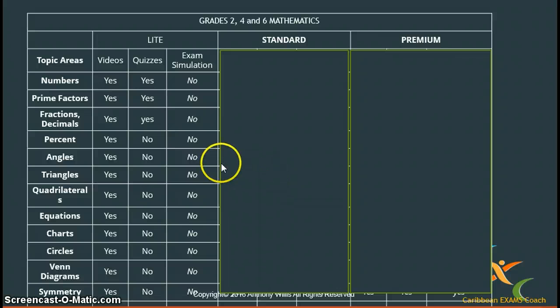What are the contents of the modules? For mathematics grades 2, 4, and 6 assessment mathematics topic areas: numbers, prime factors, fractions, decimals, percent, angles, triangles, quadrilaterals, equations, charts, circles, Venn diagrams, symmetry, and much more.